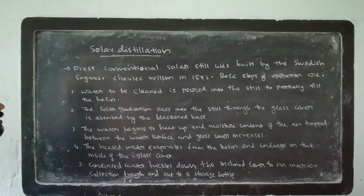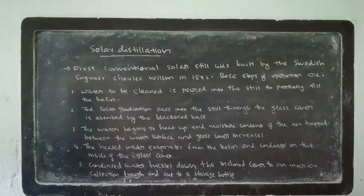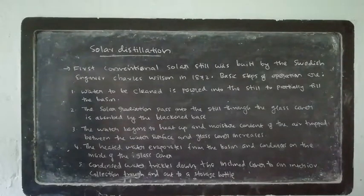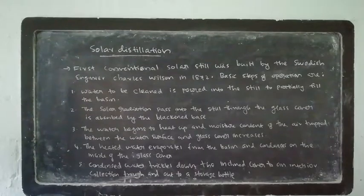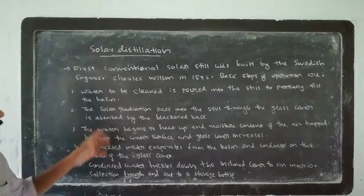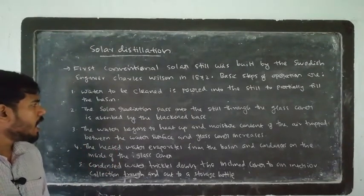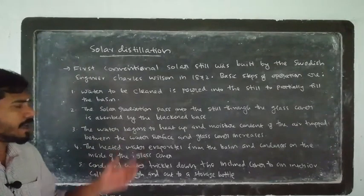These are the basic steps of operation of solar distillation. First step: water to be cleaned is poured into the still to partially fill the basin. Second step: solar radiation passes into the still through the glass cover and is absorbed by the blackened base. The solar still has a blackened base, and solar radiation enters through the glass cover.